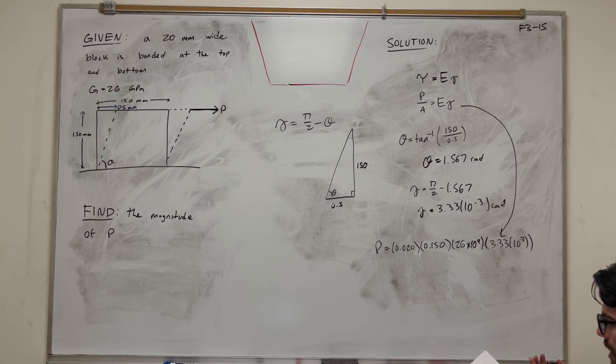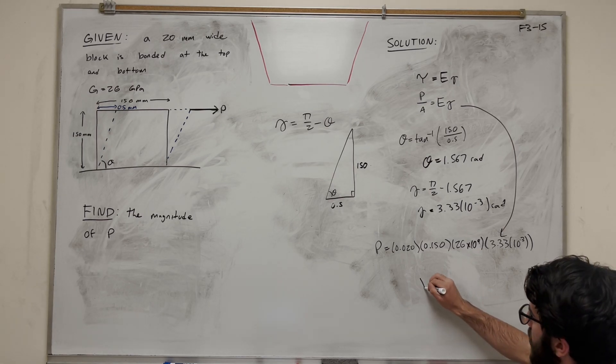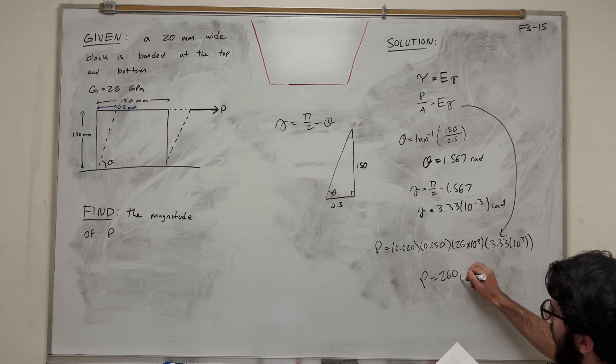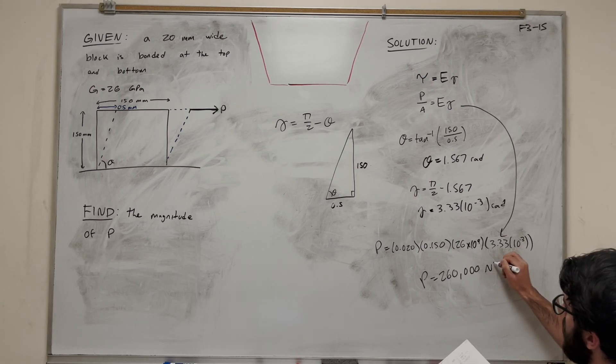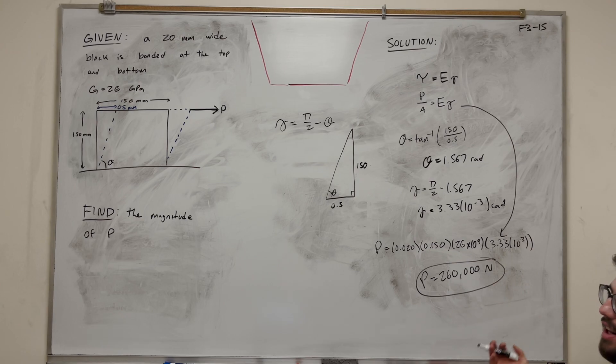This is everything we need in our equation. We're going to calculate that P is equal to 260,000 Newtons. There we go, that's our final answer.